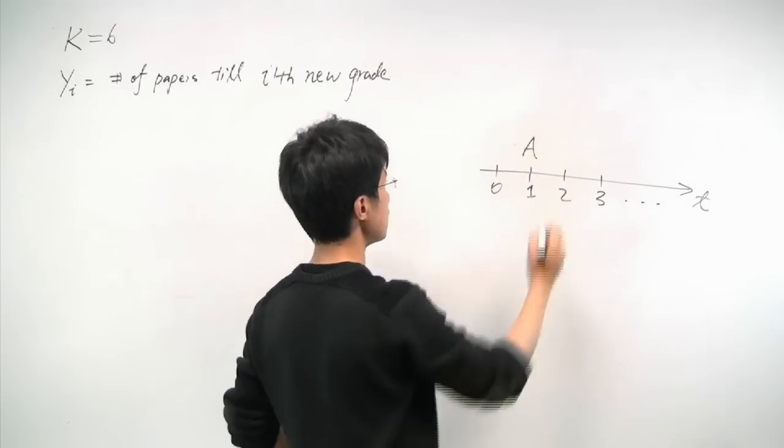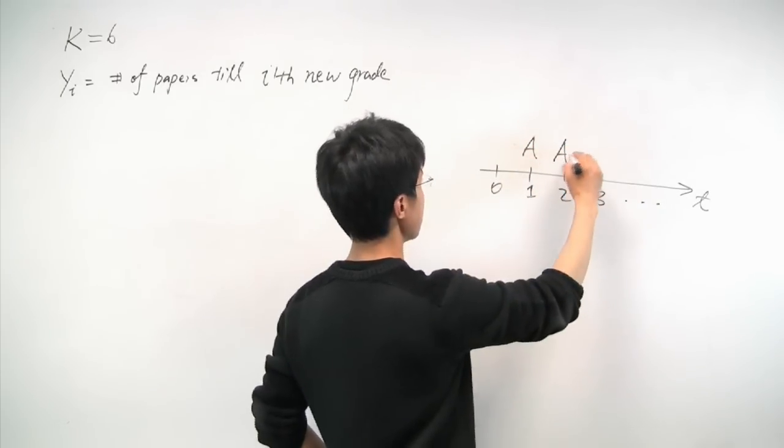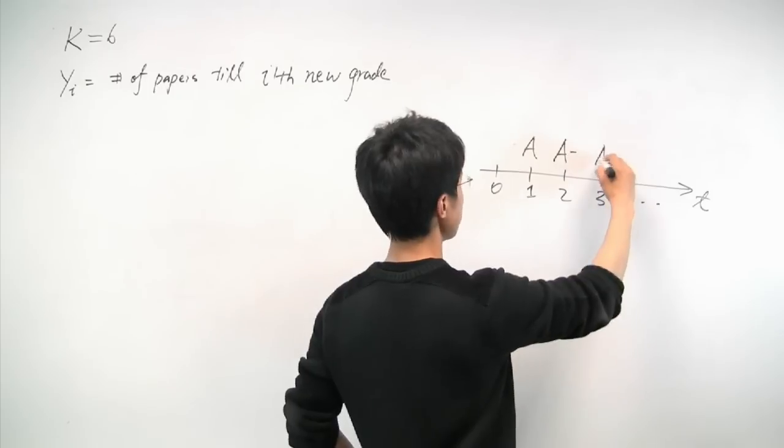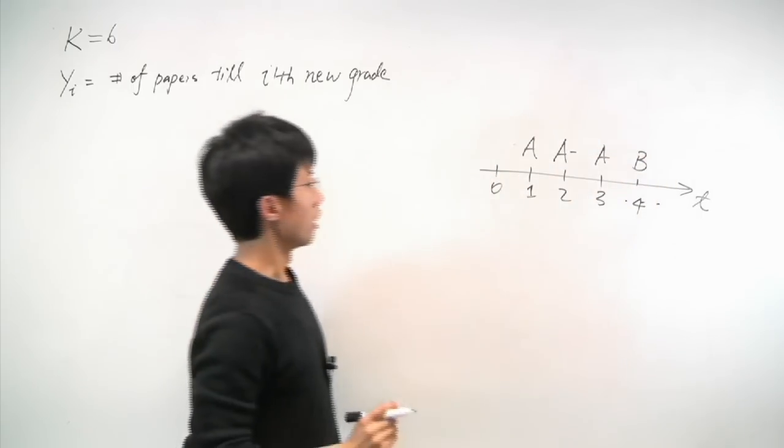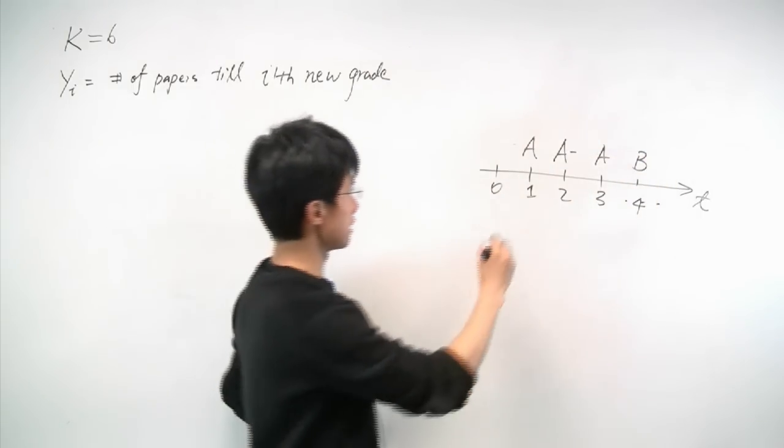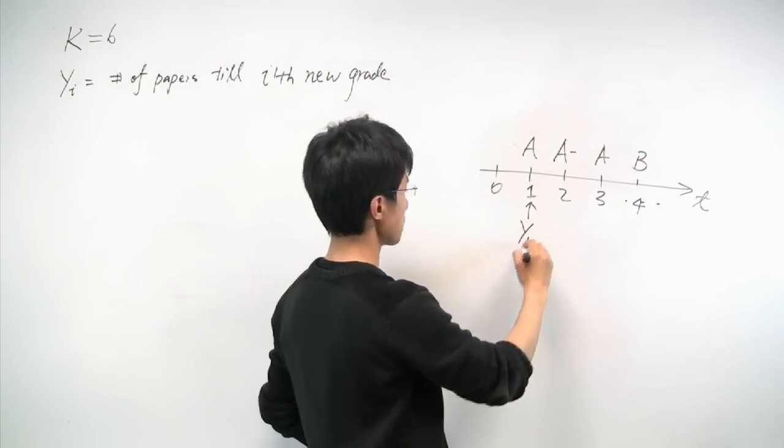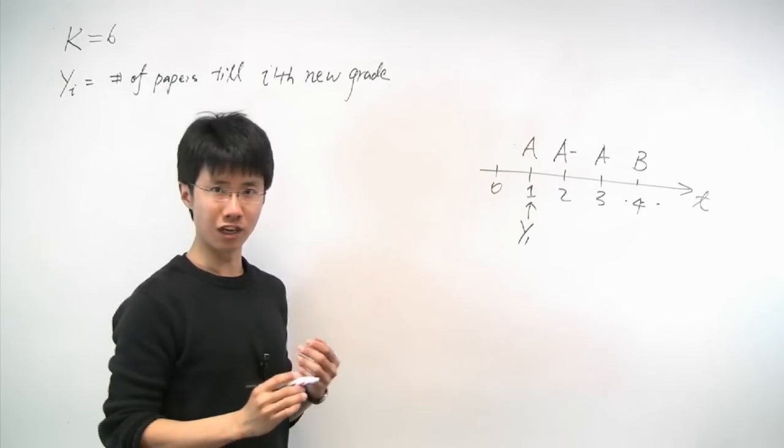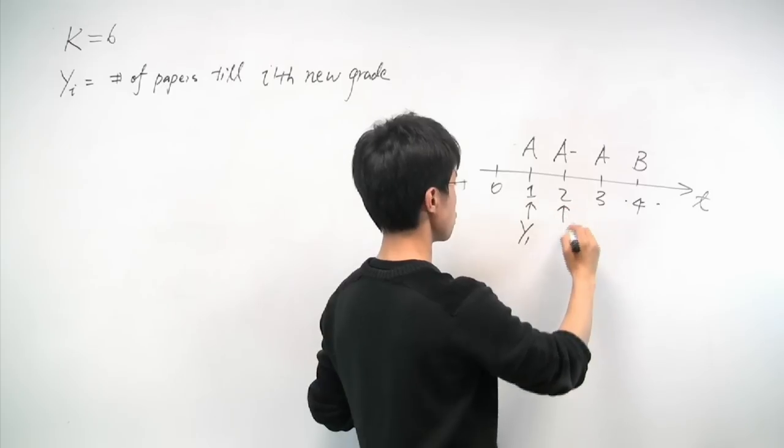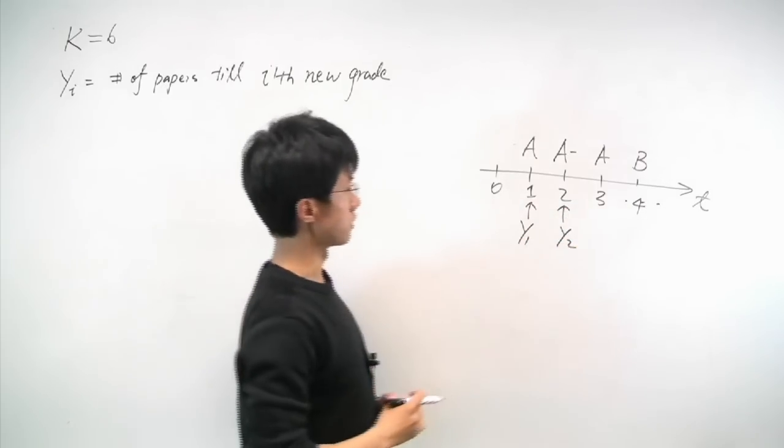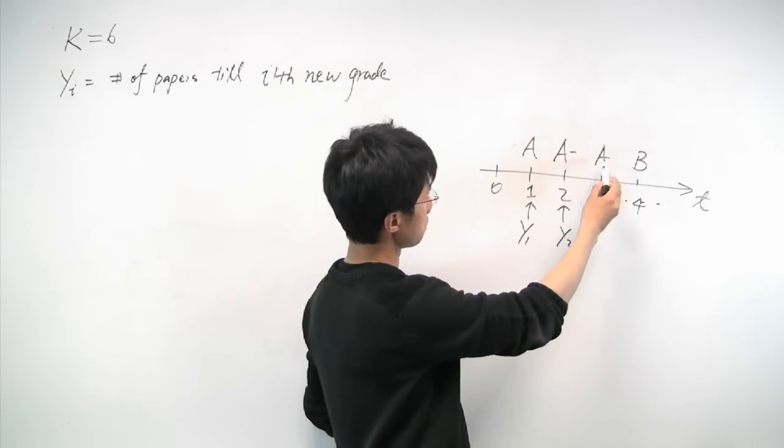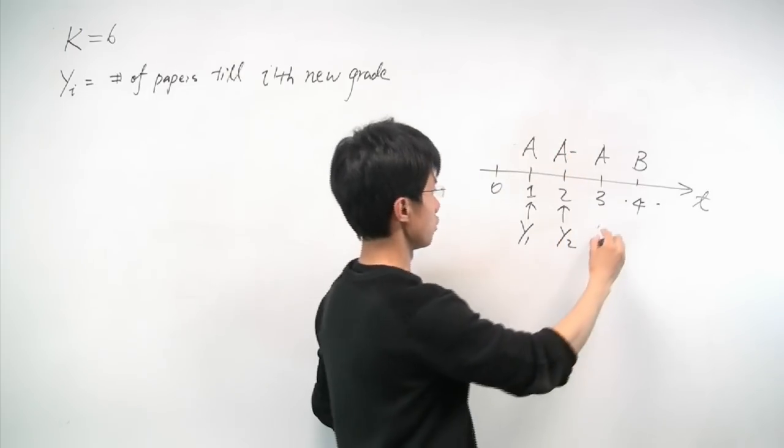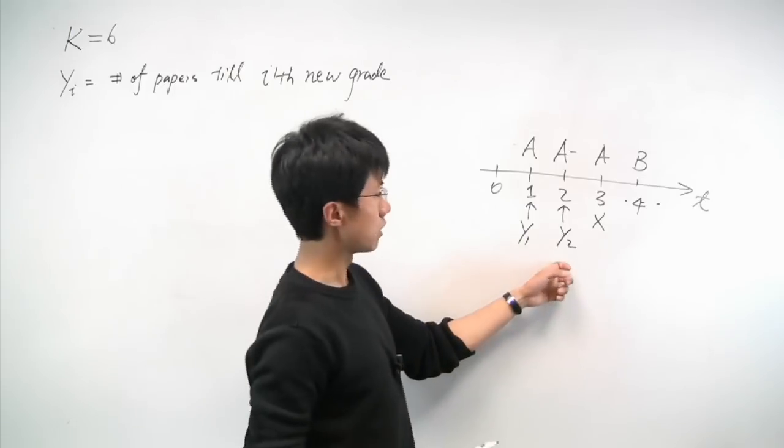Now, if we got grade A on the first slot, grade A- on the second slot, A again on the third slot, and on the fourth slot we got B. According to this process, we see that y1 is always 1, because whatever we got on the first slot will be a new grade. Now y2 is 2, because the second paper is again a new grade. On the third paper, we got a grade which is the same as the first grade, so that would not count as any yi.